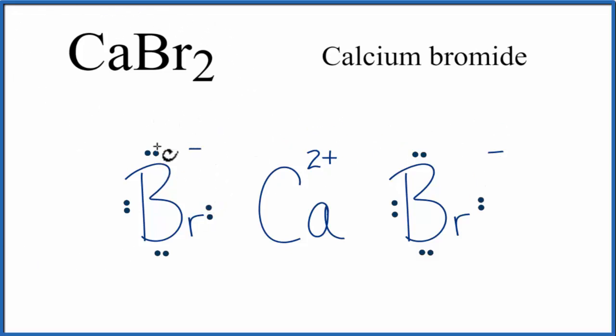We need to write brackets around each of these bromide ions. And we do that to show that these two electrons that calcium had have been transferred, they're now with the bromine, that they're not shared like in a covalent bond.